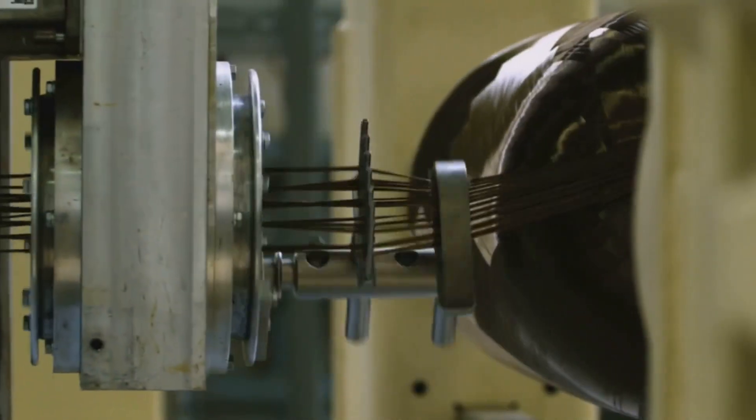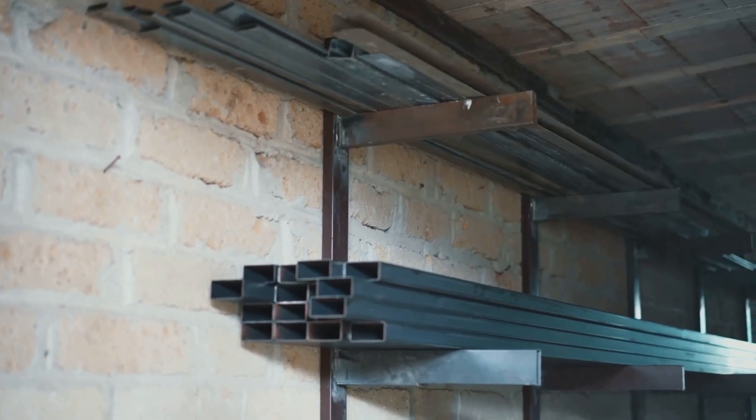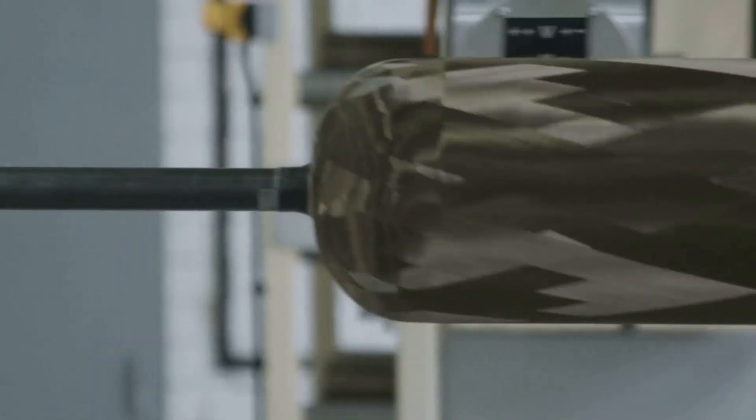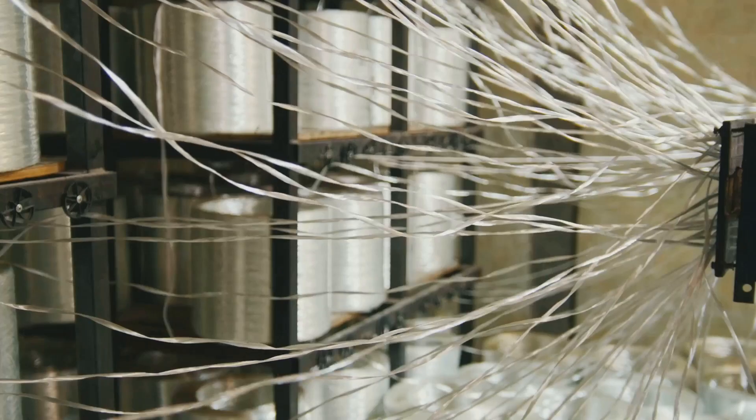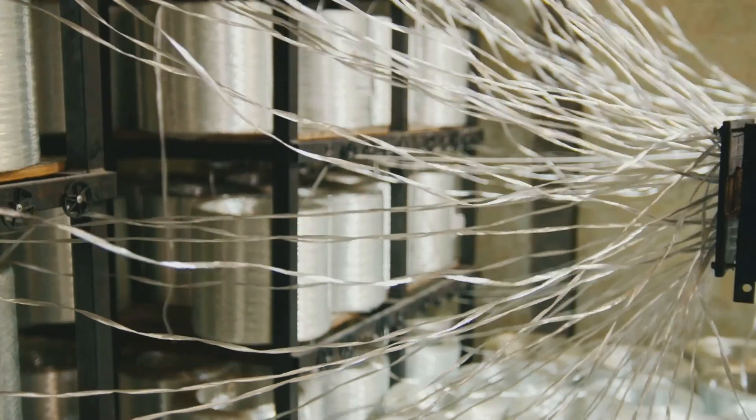Imagine a thread thinner than a human hair, yet stronger than steel and lighter than aluminum. This is carbon fiber. Born from carbon, the same element in diamonds and pencil graphite, carbon fiber is a marvel of atomic engineering.